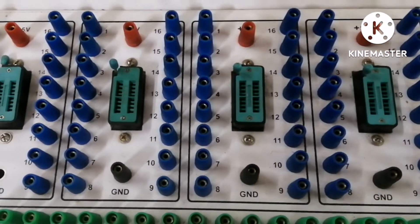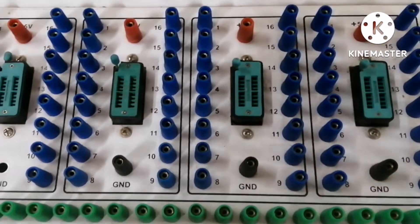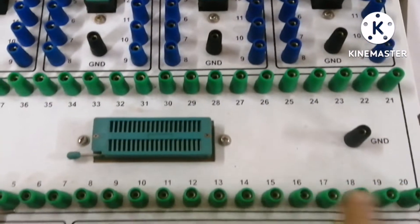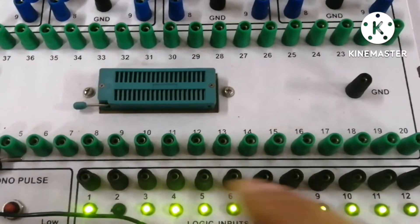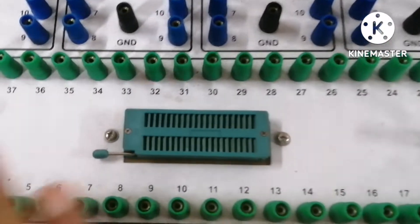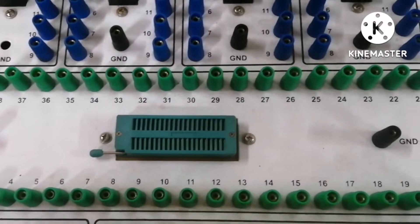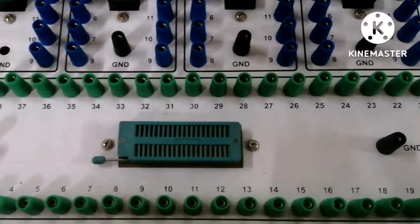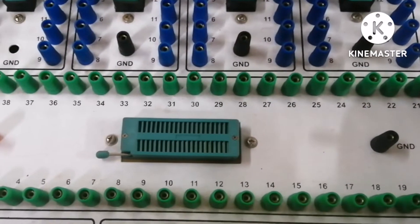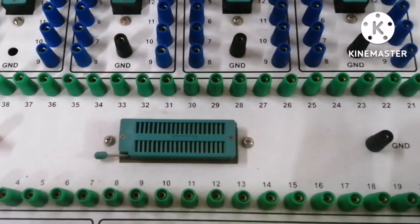If ICs exceeding 16 pins are there, a bigger zig has been given below. It can check up to 40-pin ICs. Pin number 1 starts over here, 20 over here, 21, and up to 40 pins we can see.